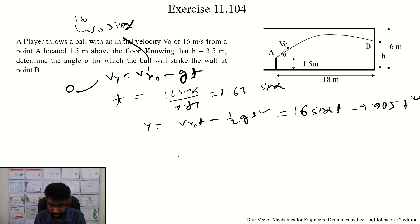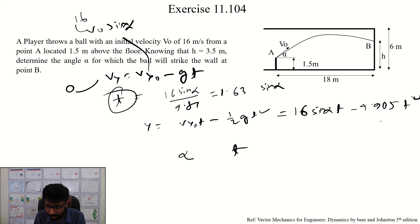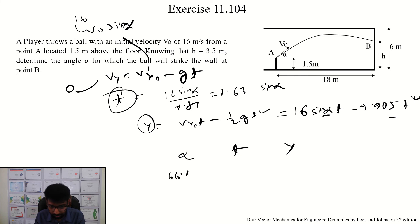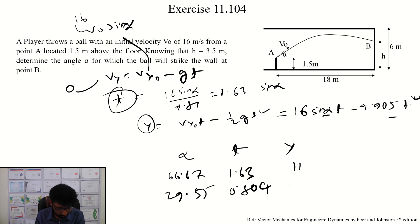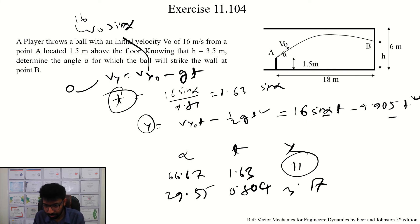So we will find alpha. The alpha values were 66.67 degrees and 29.55 degrees. We find the corresponding y values: the y value is 0.804 and the y value is 3.17. The y value is also 0.11.